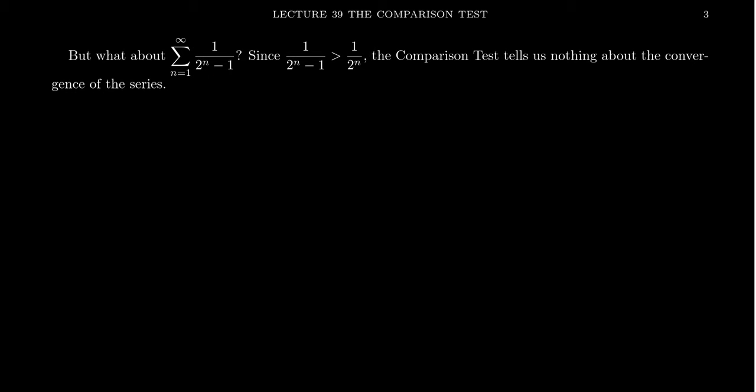Things are different when we have a minus 1 there. If we remove a negative quantity from the denominator, the denominator gets bigger, so the fraction becomes smaller and the series becomes smaller. Our geometric series would be smaller than the one we started with. While the associated geometric series is convergent, it's smaller than the series we care about, and that tells us nothing — the larger series could be convergent or divergent.